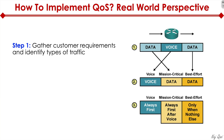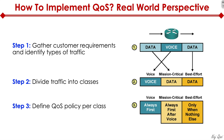The first thing you want to do is gather customer requirements and identify types of traffic in their network. Next, after identifying the traffic, divide it into different classes — specifying if it's voice, mission critical, best effort, and so on. Finally, in step three, you define your QoS policy for each class.